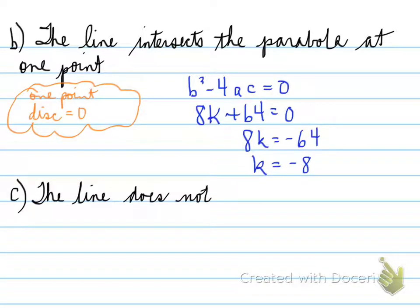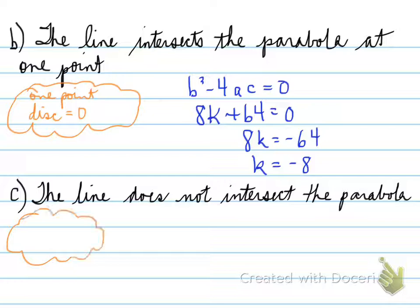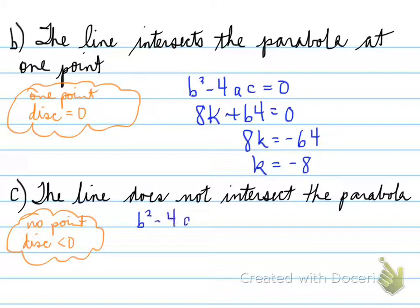Part c: the line does not intersect the parabola. No intersection point means the discriminant is less than 0. Setting the discriminant less than 0, we find that k must be less than negative 8.